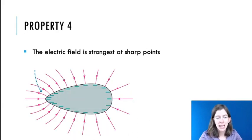The fourth property is that the electric field is strongest at sharp points. And this is because the charge is going to accumulate at the sharp points. On your flat surfaces, the charges can spread out more. So if you have more charges accumulating at the sharp points, then the electric field will be stronger there.